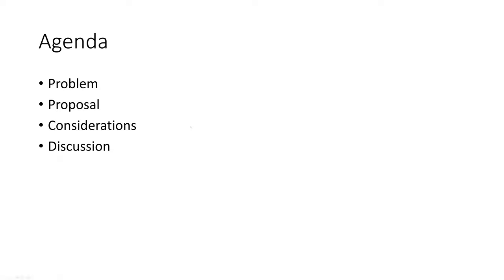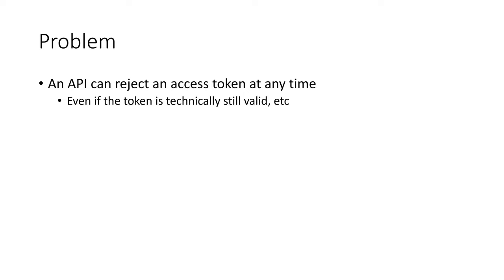All right, so let's talk about the problem. An API can reject the token you send at any time. I'm not talking about not having enough permissions or authorization logic — all the normal things you would expect in the context of calling an API. Here I mean a client that did absolutely everything right, which still holds an access token which is still valid as far as the client is concerned, and yet when you send it to the API, somehow it worked until the second before and now it no longer works.